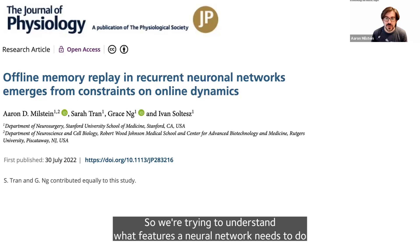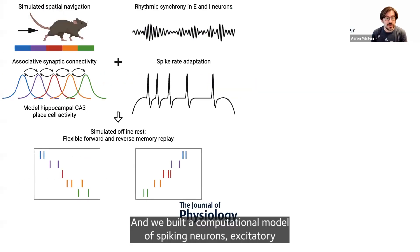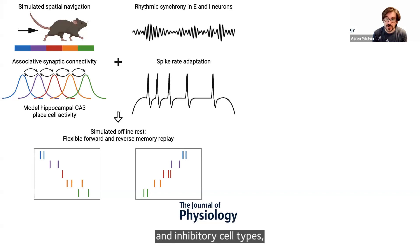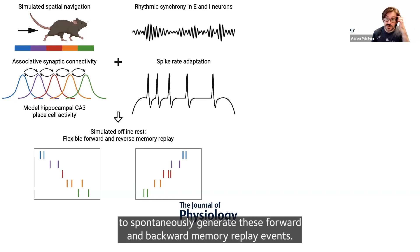So we're trying to understand what features a neuronal network needs to do this forward and backward offline replay in the absence of sensory input. We built a computational model of spiking neurons, excitatory and inhibitory cell types, and we found that there are a couple of key ingredients for a network to be able to spontaneously generate these forward and backward memory replay events.